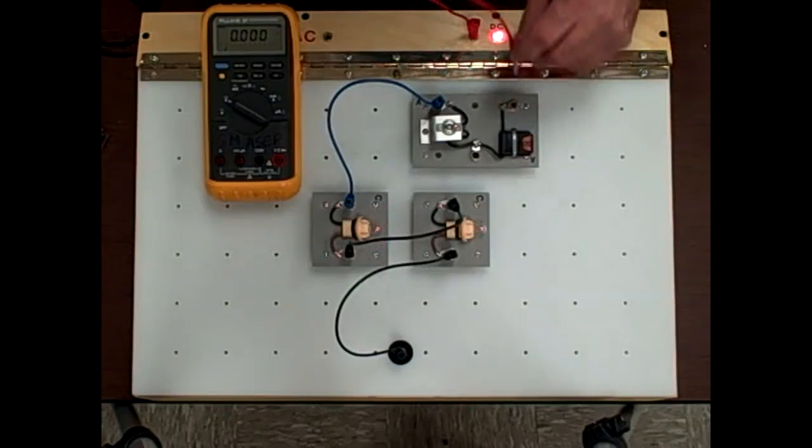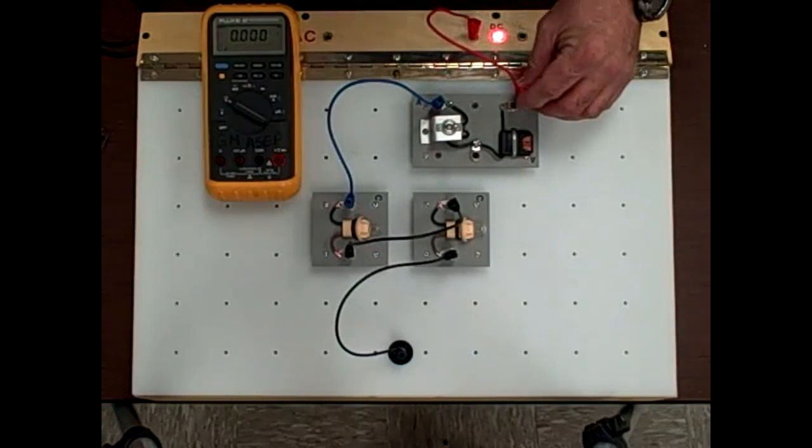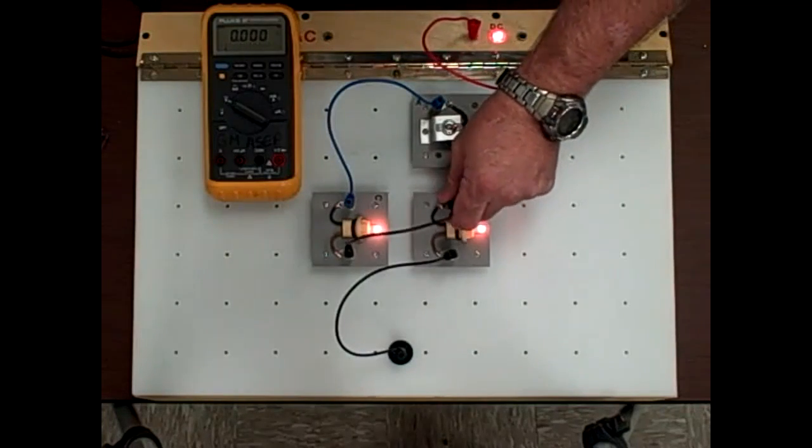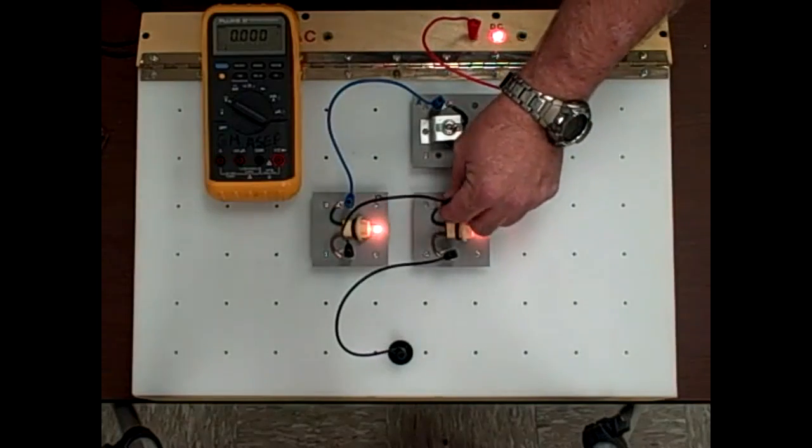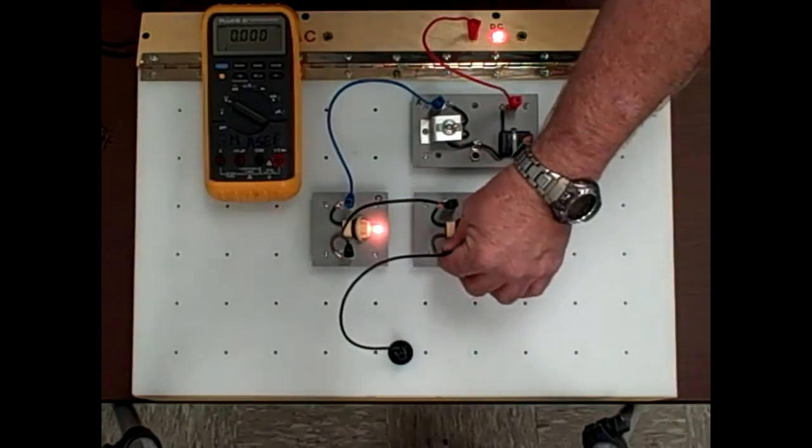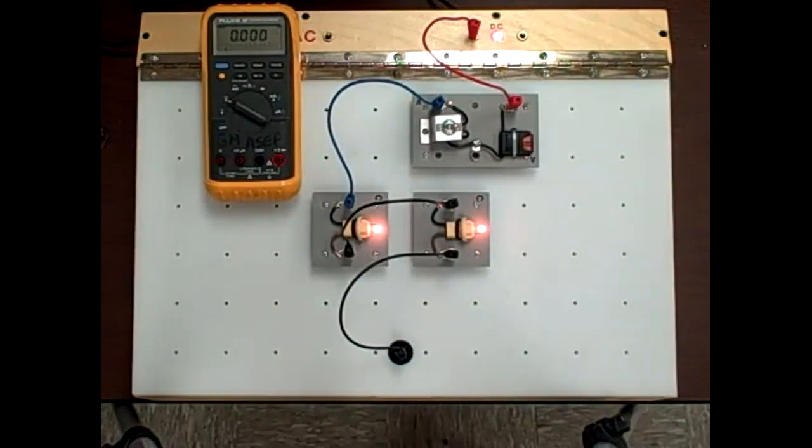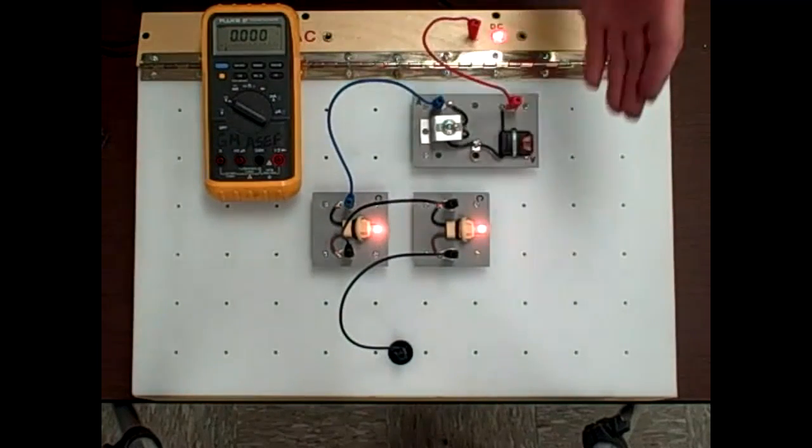Anywhere along the line that I have an open the circuit goes dead. That's because there's only one path and so that's a rule of a series circuit - anywhere along the line that I have an open it's going to kill the whole circuit.